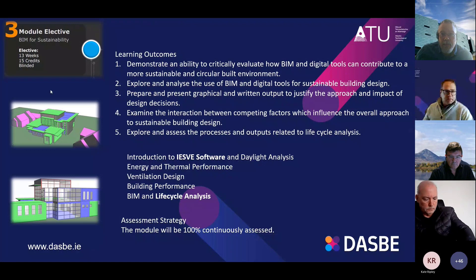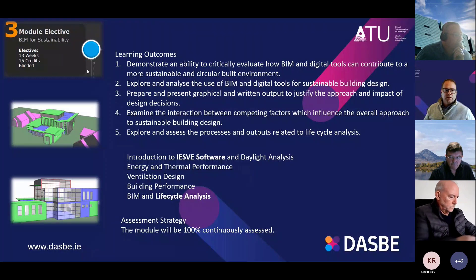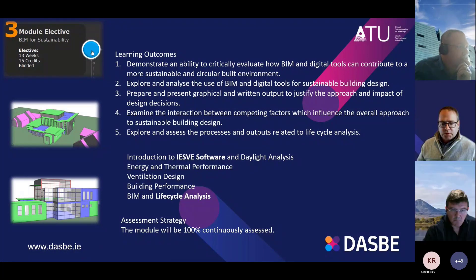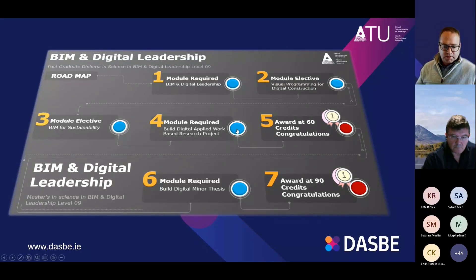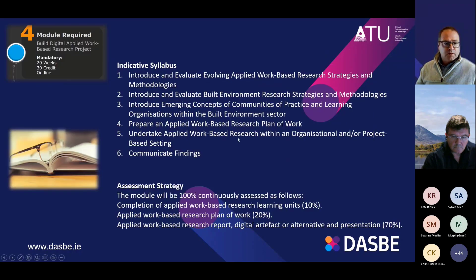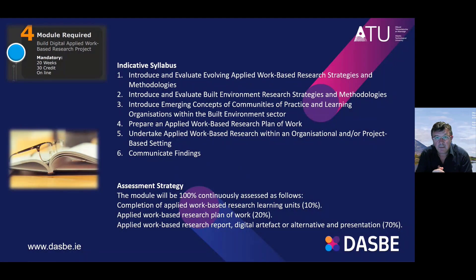This elective is delivered over 13 weeks and is worth 15 credits, the same as the other elective. The fourth item on the list is the Applied Work-Based Research Project. John Scahill will talk us through this module. The Applied Work-Based Project is a 30-credit module and forms the second part of the Diploma in BIM and Digital Leadership.